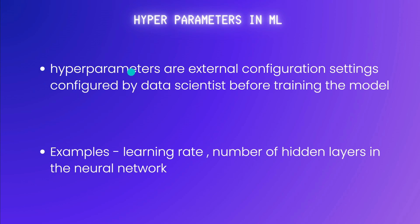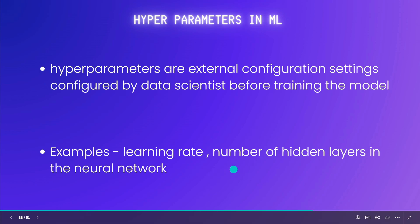Think of hyperparameters as the external settings that we as ML engineers configure before training our model. They guide the learning process, but unlike regular parameters, they are not learned from the data. Some examples of hyperparameters are learning rate, which determines the step size during optimization, batch size, defining how many data points are processed at once, and the number of hidden layers in the neural network.